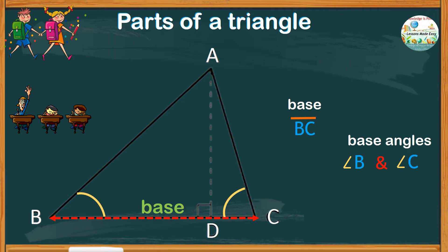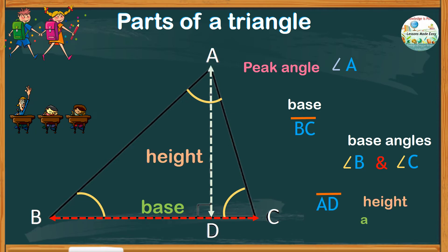As what we have said earlier, opposite the base is the peak angle. And in this example, the peak angle is angle A. The distance from A to D is called the height or altitude.